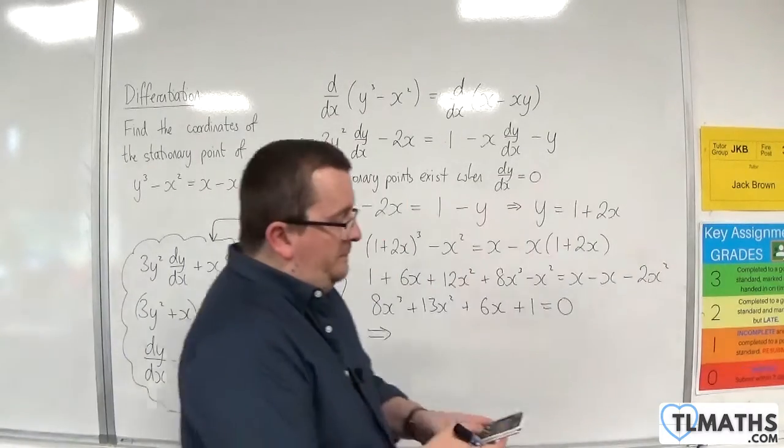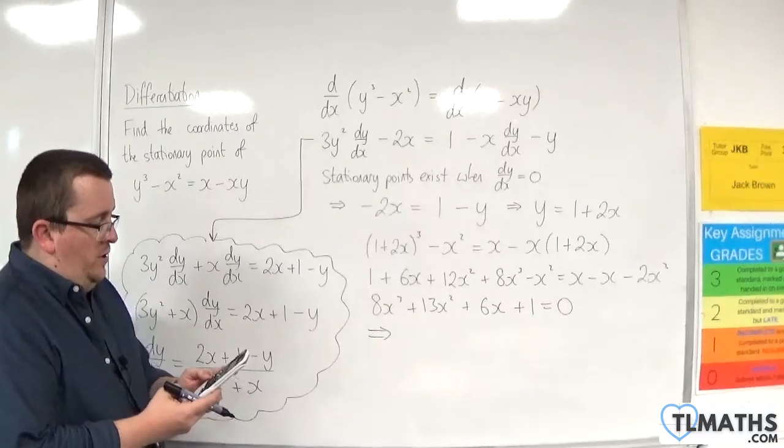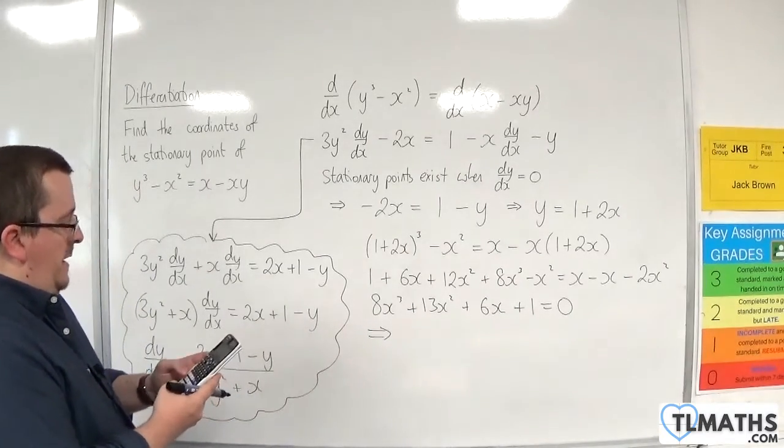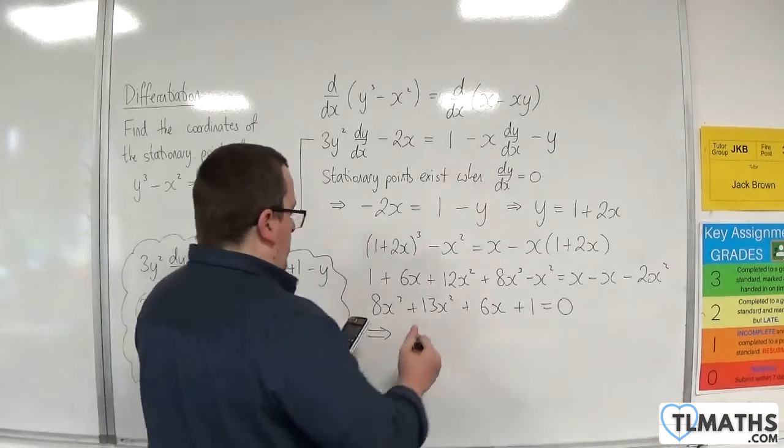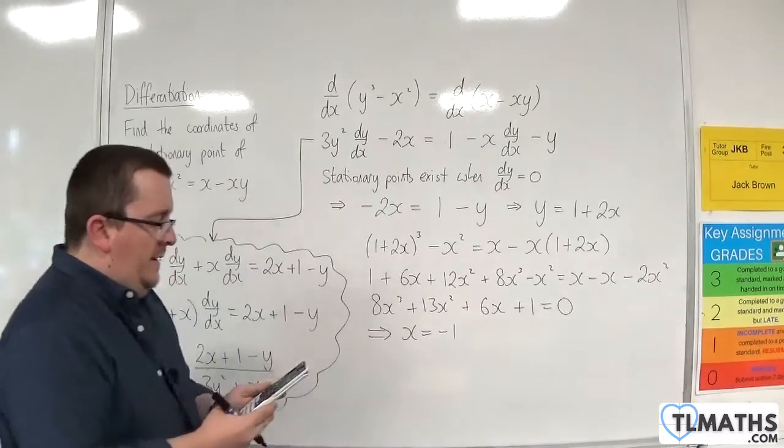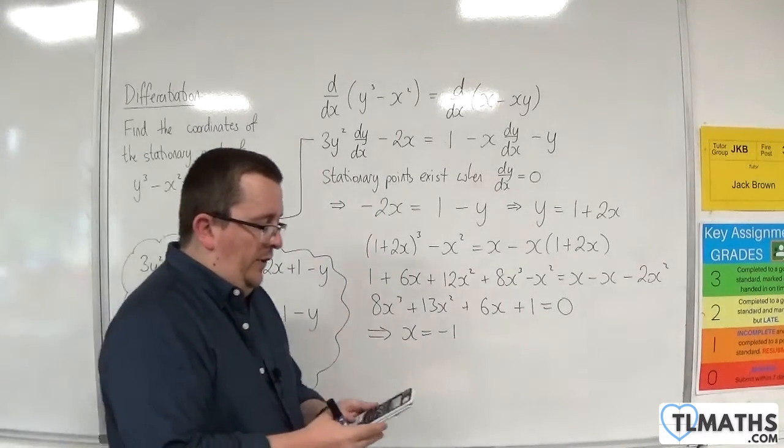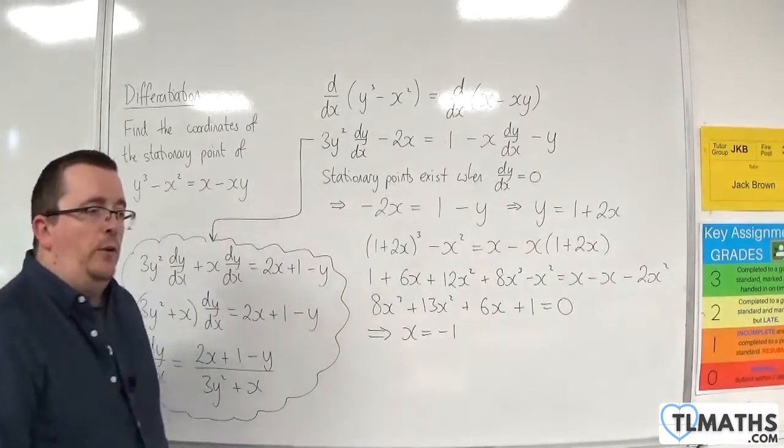So, we're going to solve that cubic. So, menu, equation function, polynomial, degree 3. We've got 8, 13, 6, and 1. So, we get x is -1. And the other solutions are complex. So, we have no more real solutions. So, the only real solution is x = -1.